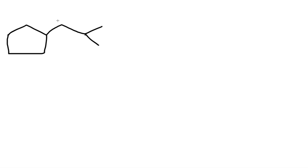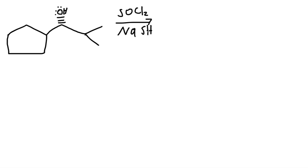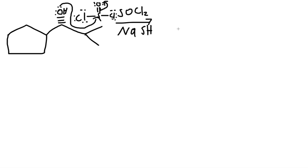Let's do one more problem. We have a structure with OH on a dash — two lone pairs — so the product must also be a dash. We react this with thionyl chloride, SOCl2, and NaSH as the nucleophile, which is a very strong nucleophile. The thionyl chloride comes in — the oxygen has two lone pairs and the chlorines have three lone pairs. The oxygen lone pair attacks the sulfur; the bond between sulfur and oxygen goes to the oxygen to form a negative charge, giving us our intermediate.